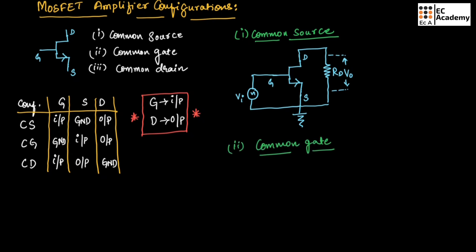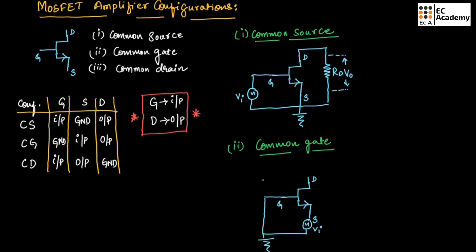Now let us see the common gate configuration. Here the gate terminal is connected to ground, the source terminal is connected to the input, and the drain terminal is connected to the output. At source we connect the input and at drain we measure the output. We connect a resistor RD between source and the drain terminal, and across this resistor we measure the output voltage. This is the general circuit for common gate configuration.